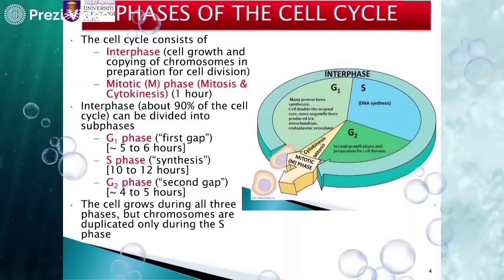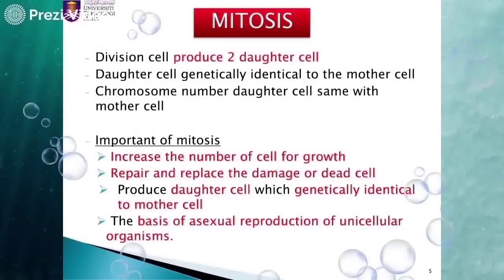M phase, or mitotic phase. Mitosis is a process of cell division in which the nucleus of the parent cell produces two daughter cells. The two daughter cells are genetically identical to their mother cell and also have the same number of chromosomes. Mitotic cell division is important because it increases the number of cells for growth, repair, and replacement of dead cells. It is also the basis of asexual reproduction in unicellular organisms.